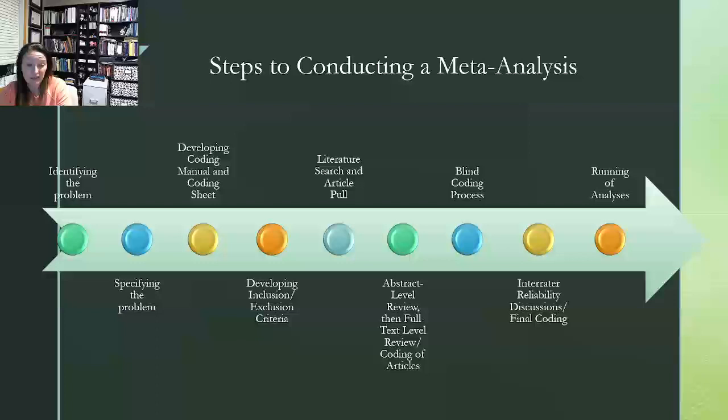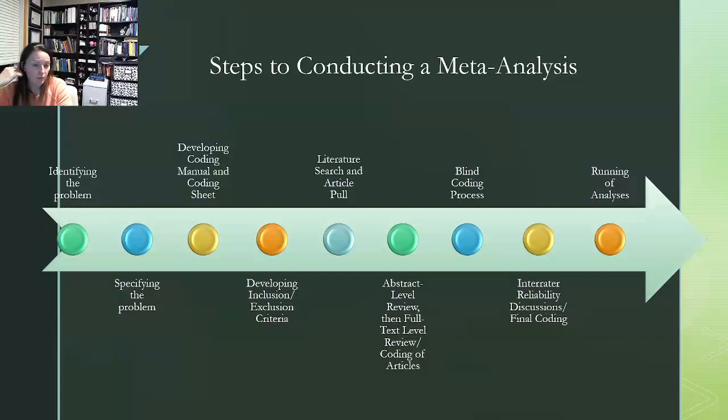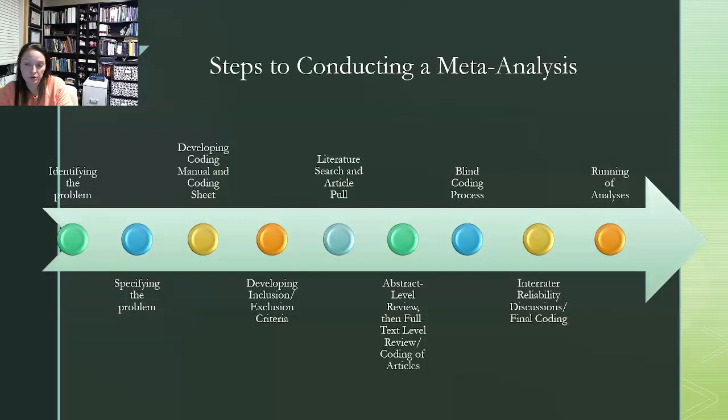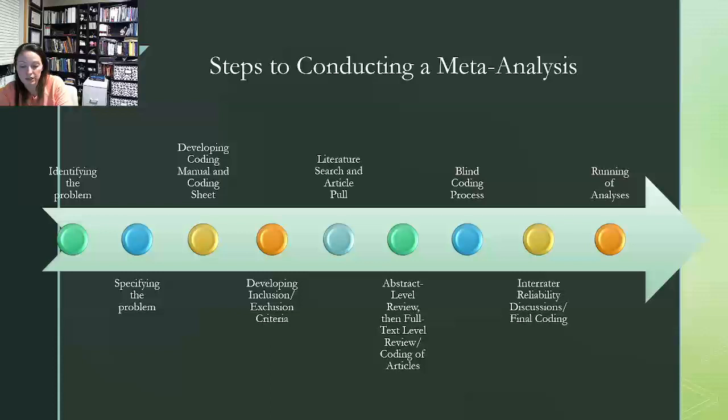And so after all of that coding process is complete, both initial and blind codes, you all come together as a group to have what's called an inter-rater reliability meeting or discussion. And this is where you essentially argue it out. So you discuss what codes you came to. And when there are differences, you will discuss how did I come to this particular code? And then you'll determine which is the final code that should be carried forward into the final coding that makes it into the database that then goes into the software for analysis.